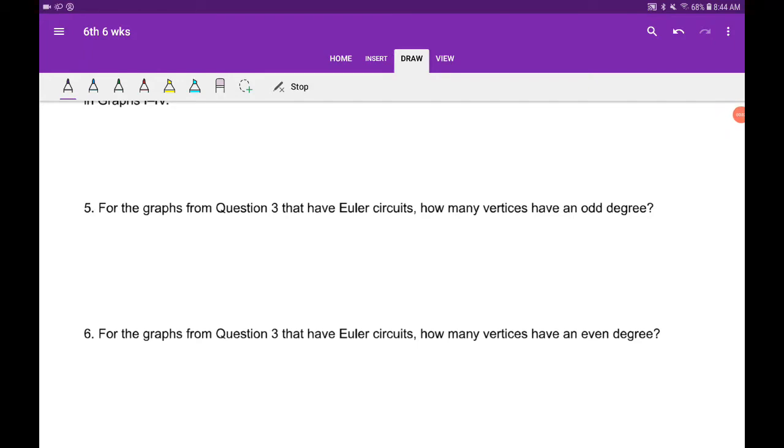All right, I'm going to answer five and six together because it's really quick. For the graphs in question three, which is four graphs we had that have Euler circuits, so we're looking at graphs one and three, how many vertices have an odd degree?